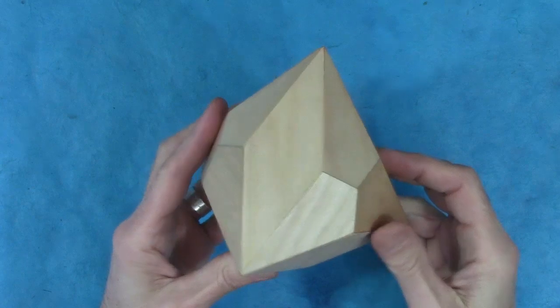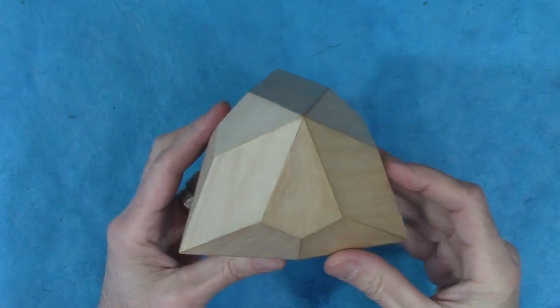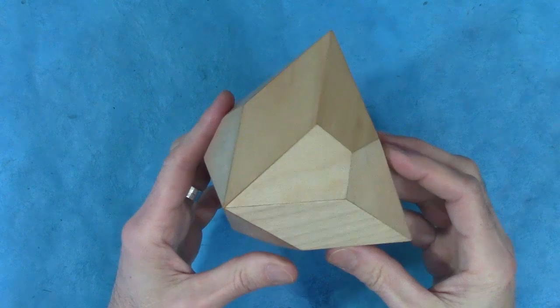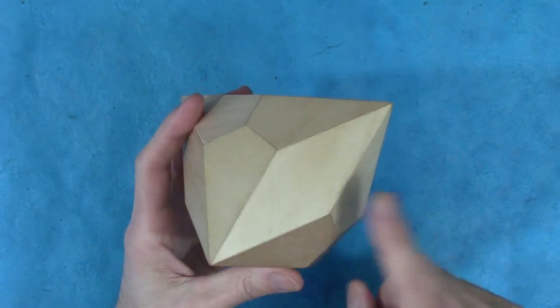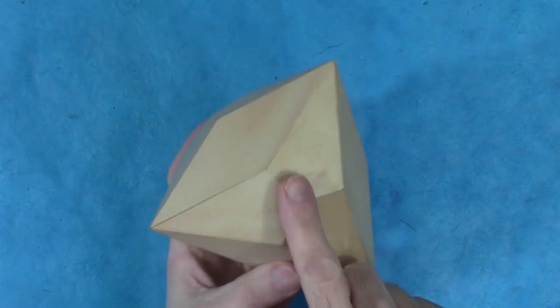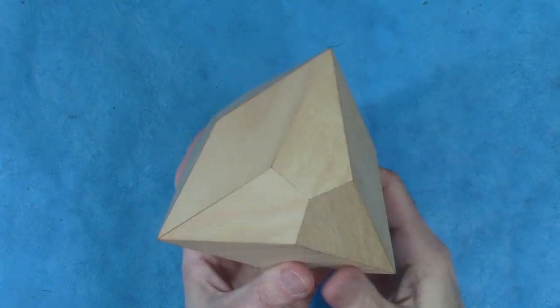It has 18 faces and is something like a puffed-up triangular pyramid. This is a wood one I made. It's assembled from six skinny rhombi and 12 kite-shaped pieces. This is made of Baltic birch.